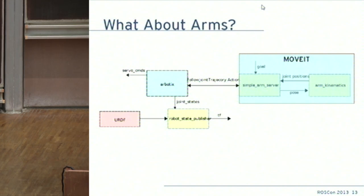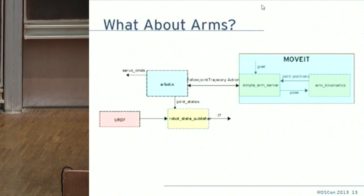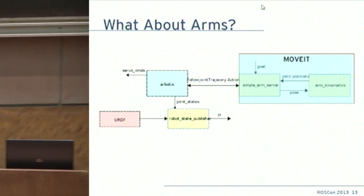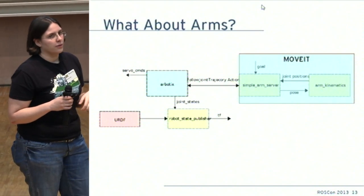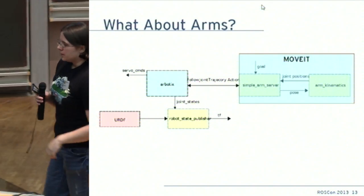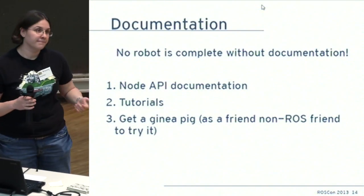For arms, the big thing you need to expose is a joint trajectory action. In the TurtleBot we used to have a simple arm server that did the kinematics and sent commands to the base controller board. Today you can just send a goal to MoveIt and it outputs a joint trajectory action. That's one of the great advantages to following standards — we developed this stuff almost two years ago and now we can just drop it in.